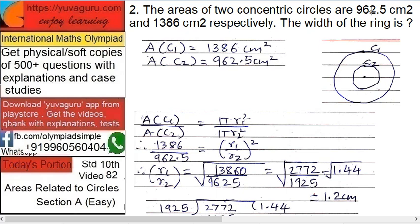Next. Areas of two concentric circles are 962 cm² and 1386 cm² respectively. The width of the ring is to be found.